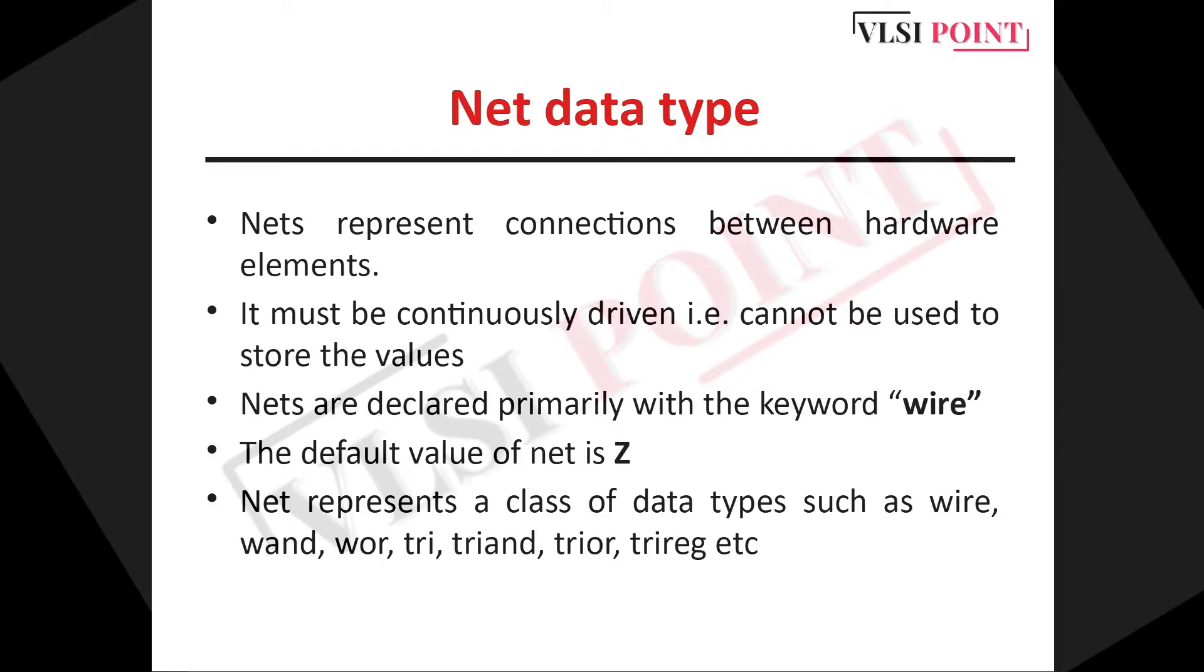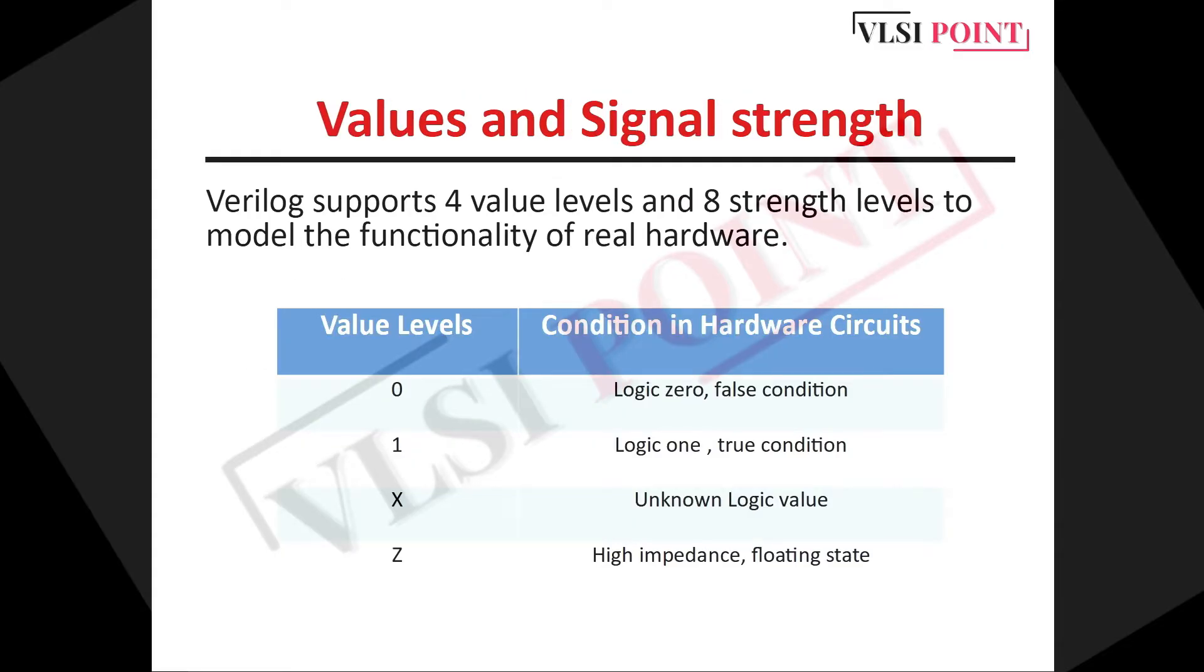So now we are moving towards values and signal strength. Verilog supports four different value levels and these are 0, 1, X and Z. So 0 represents logic 0 means false condition. 1 represents logic 1 which is true condition. X represents unknown logic. And Z represents high impedance. So this is about the value levels.